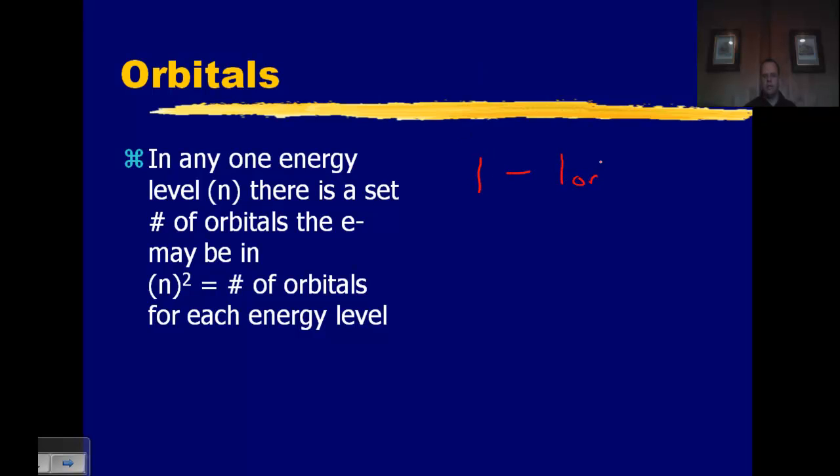So if you take the first energy level, there is one possible orbital. The second energy level, now we're further away from the nucleus, there's more space. So now we're going to have four possible orbitals. The third energy level will give us nine possible orbitals. The fourth energy level will give us sixteen possible orbitals, and we can go on like this. The further we get away from the nucleus, the more possible regions of space where we can expect to find the electron.